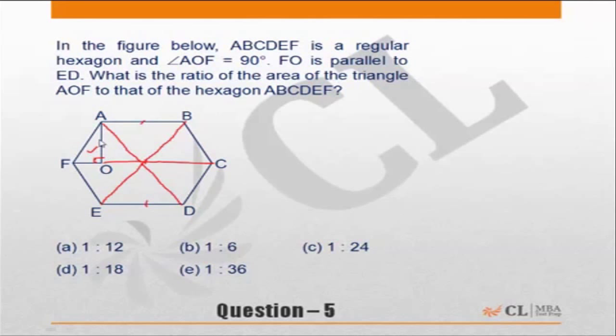If AO is perpendicular here, that means AO will divide this equilateral triangle in 2 equal areas because an altitude in an equilateral triangle is the same as the median.